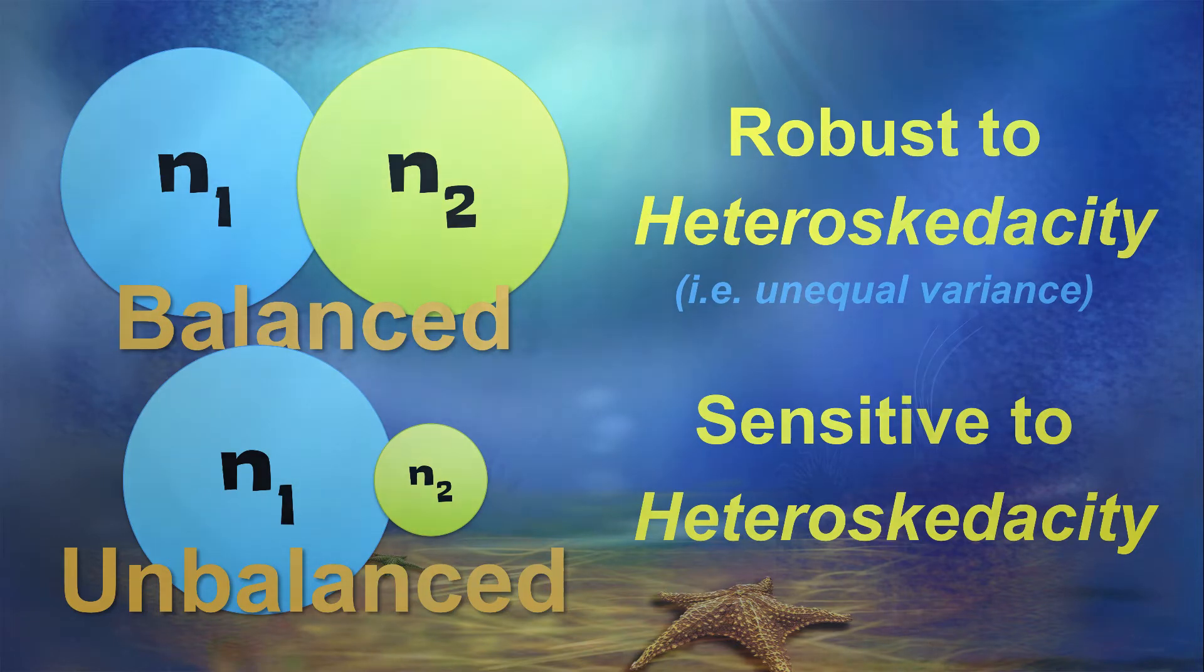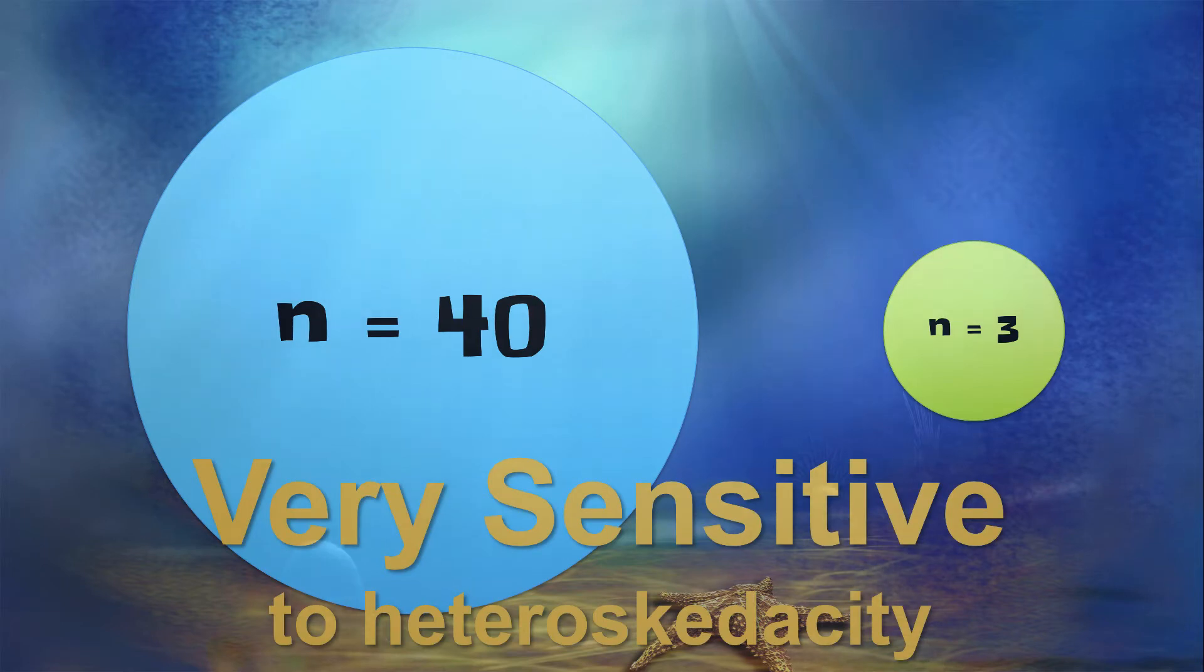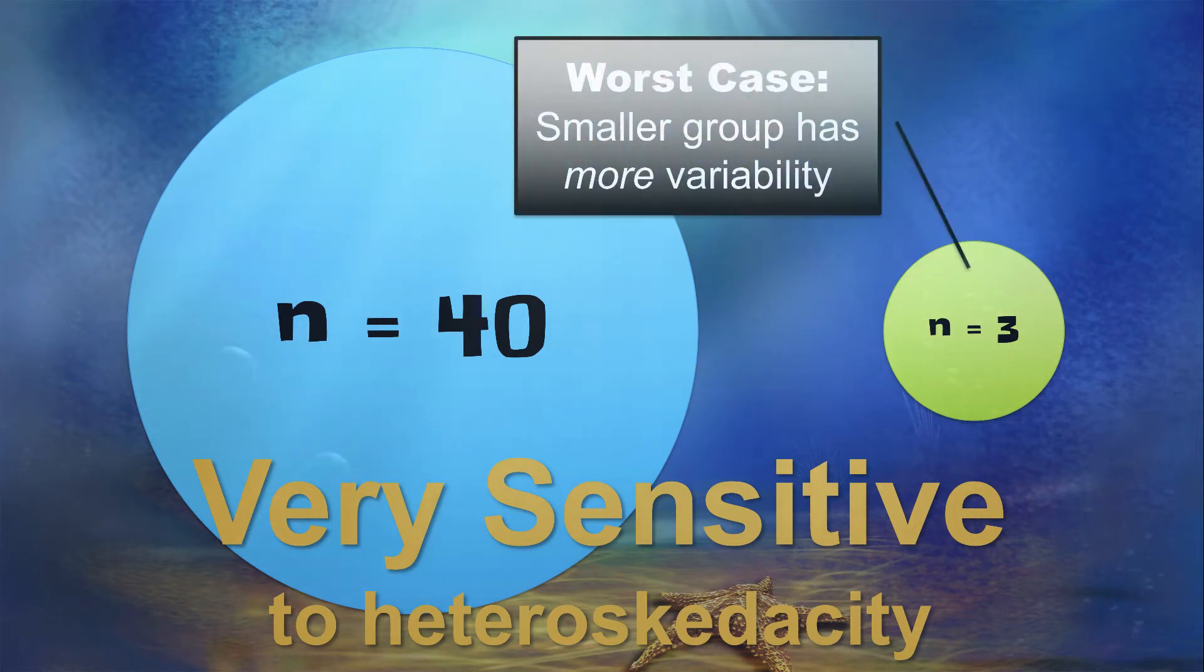In the case of the n equals 40 compared to the n equals 3, that test will be exquisitely sensitive to violations of homogeneity of variances. And the situation is even worse when the smaller group has more variability than the larger group. And that is why the t-test results could be less than trustworthy.